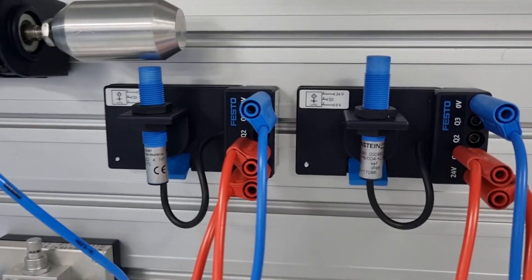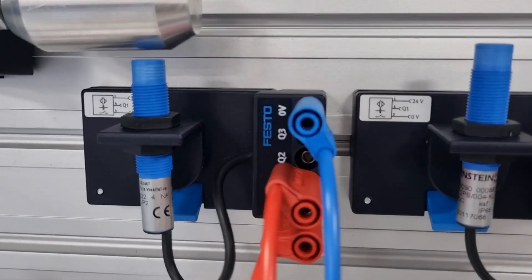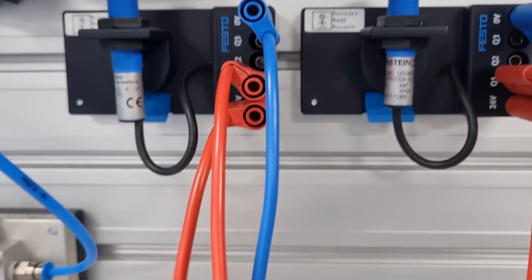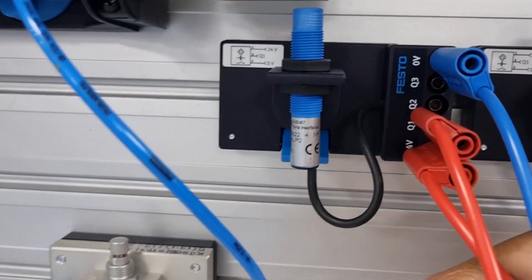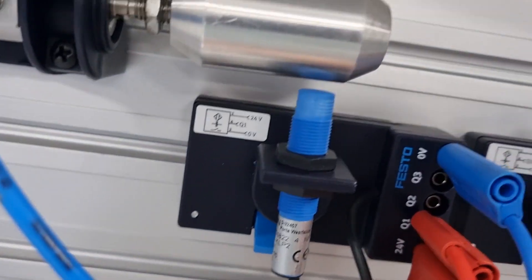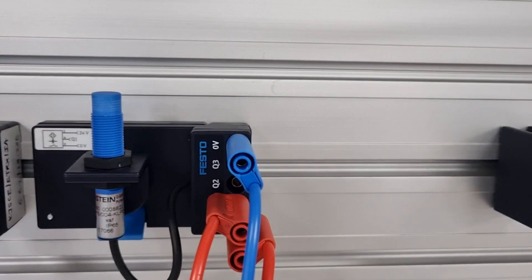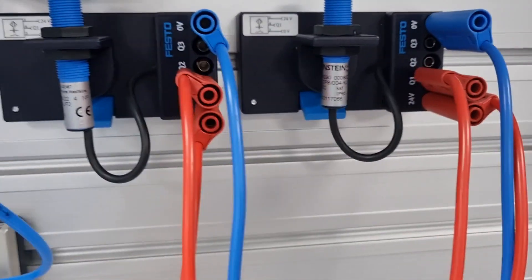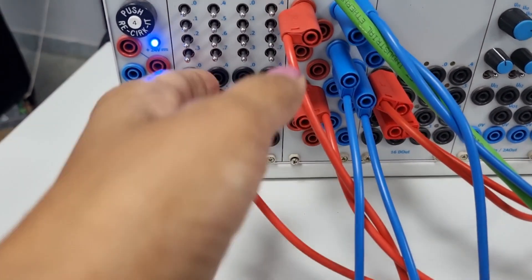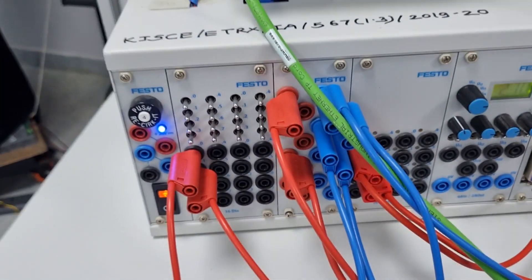Here are the two sensors, two capacitive proximity sensors. First of all, I have connected the 24 volt and zero volt of both sensors to the 24 volt and ground of this module.